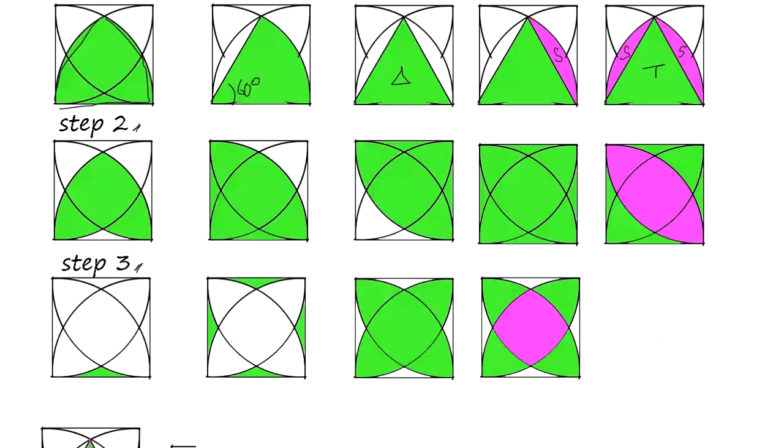What we do is, we calculate this area. How? Well, we have a quarter circle and another quarter circle. So if you add them together and subtract the square, then you get this area.